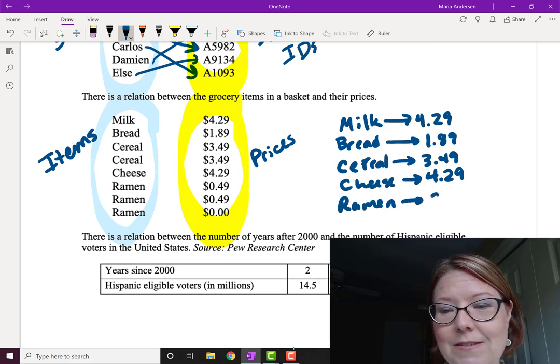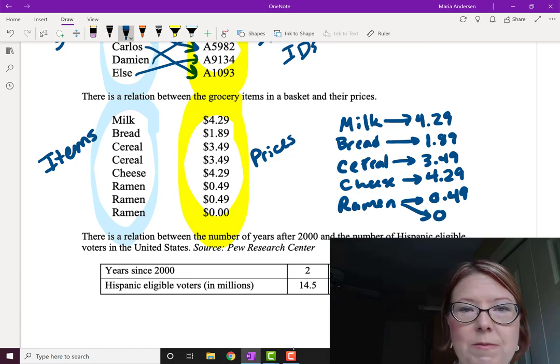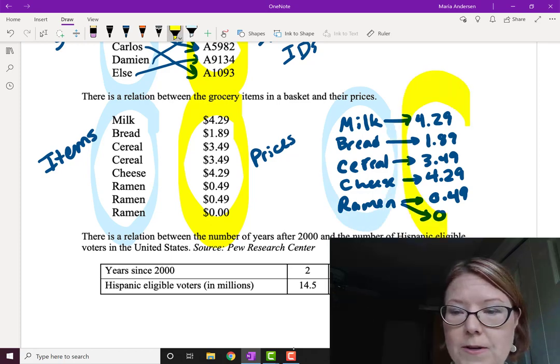It has a price of $0.49 and a price of $0.00. So that would be maybe a more compact list with our set of items on the left and our set of prices on the right.